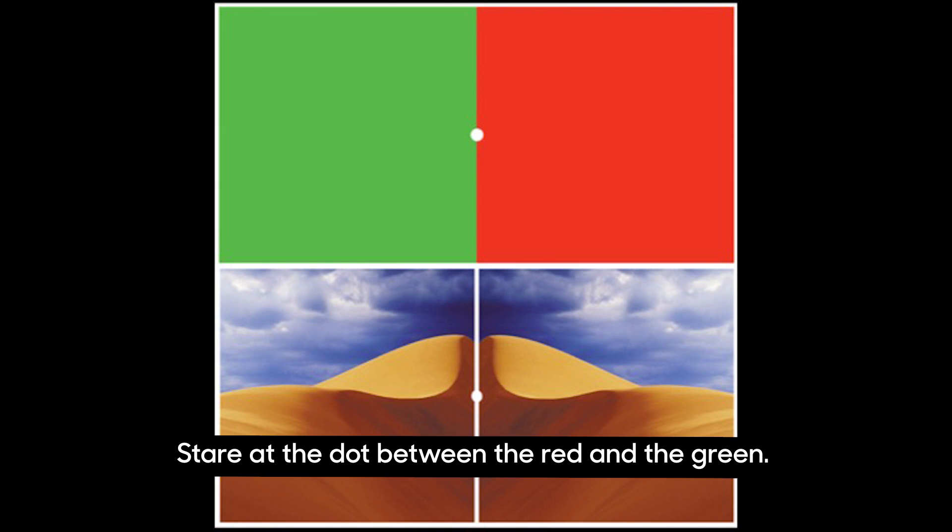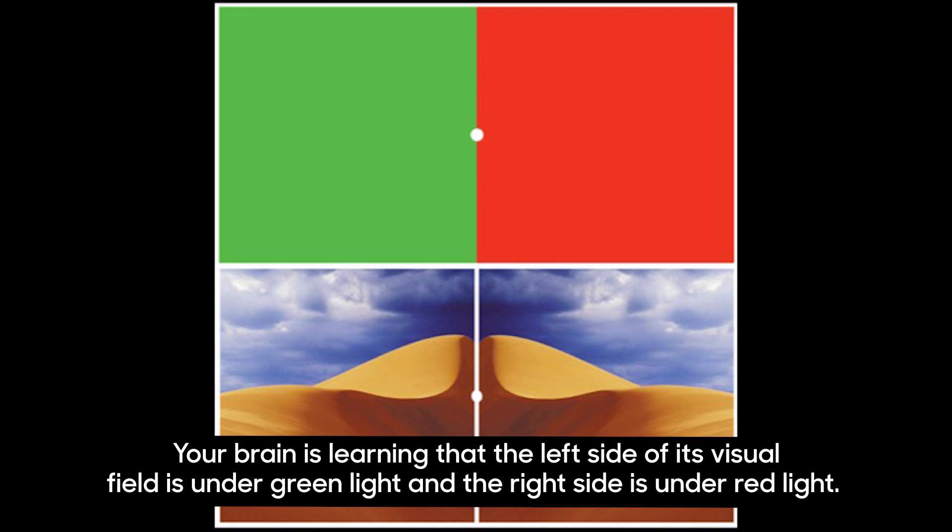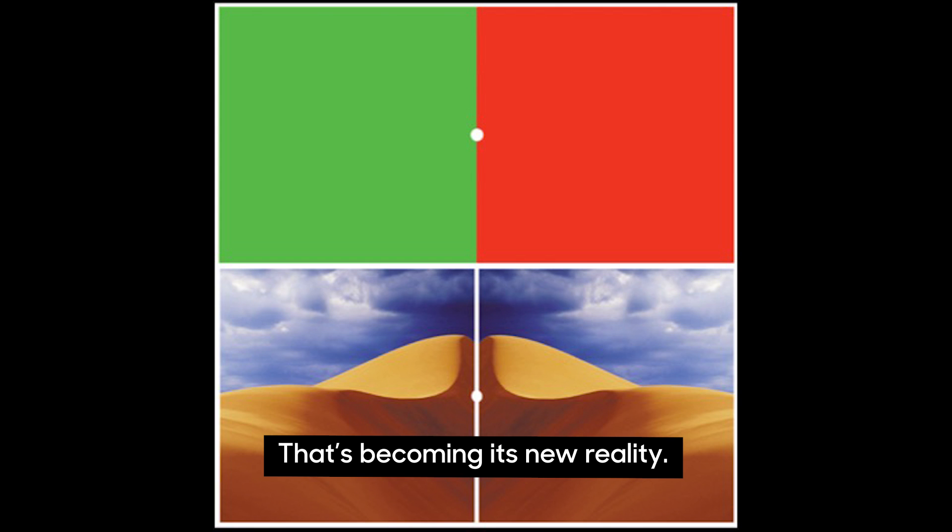I want you to stare at the dot between the red and the green. Don't look anywhere else. Just stare at that dot. And while you're doing this, I'll tell you what's happening inside your head. Your brain is learning. It's learning that the left side of its visual field is under green light, and the right side is under red light. That's becoming its new reality.